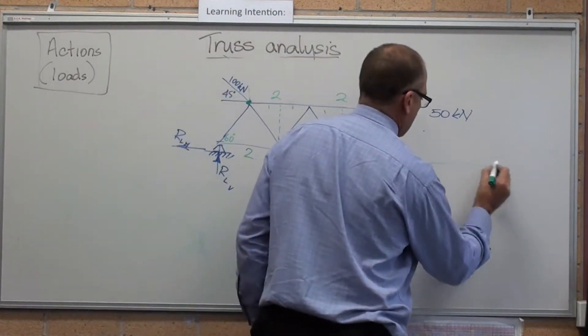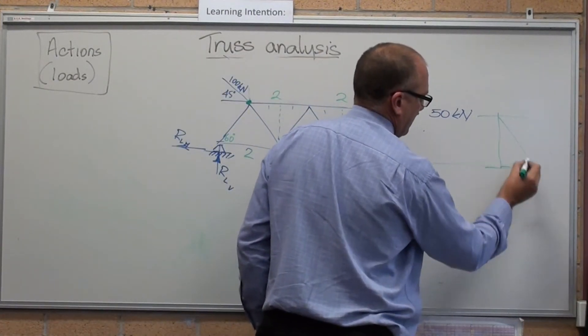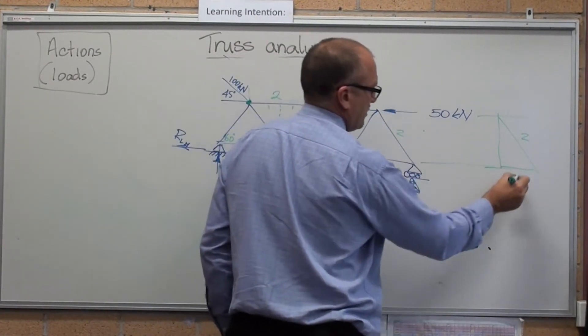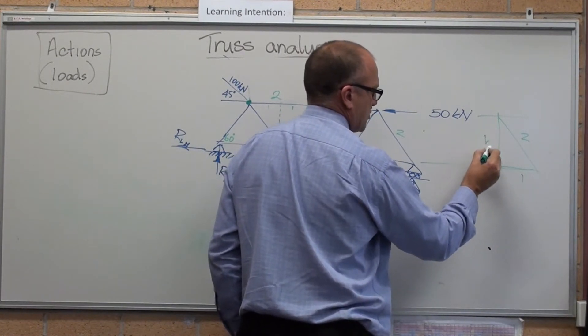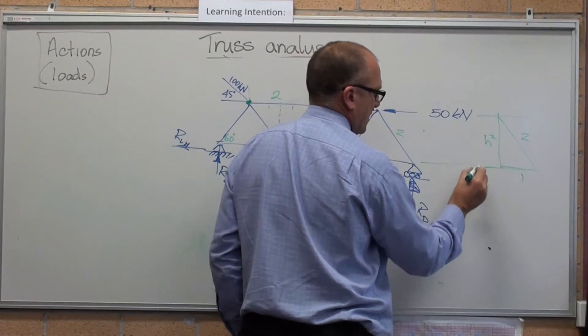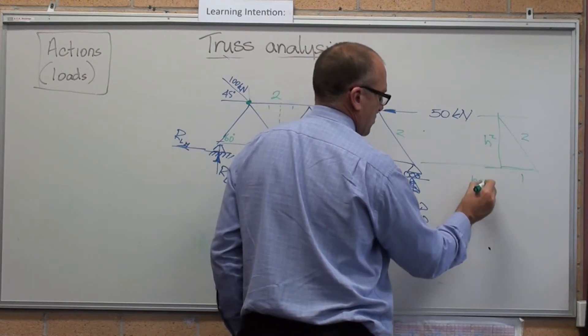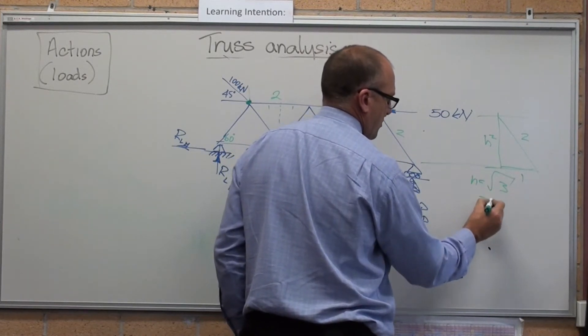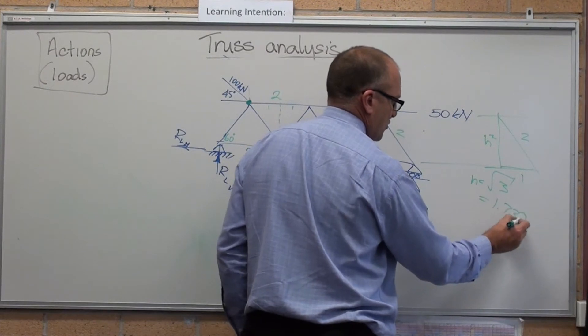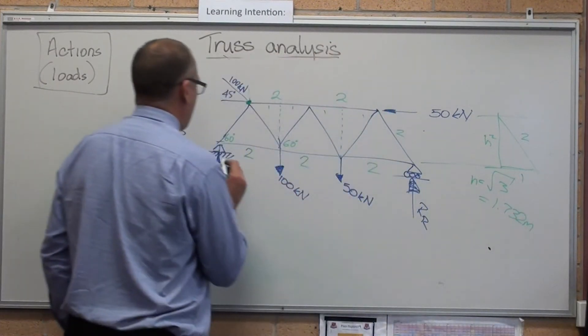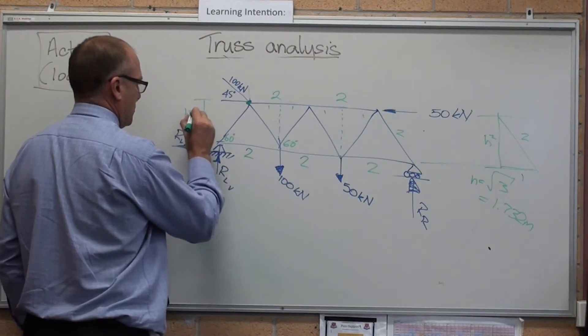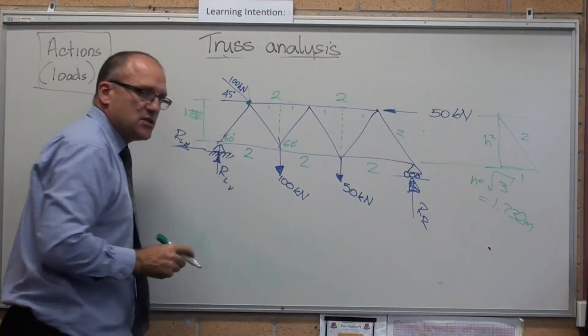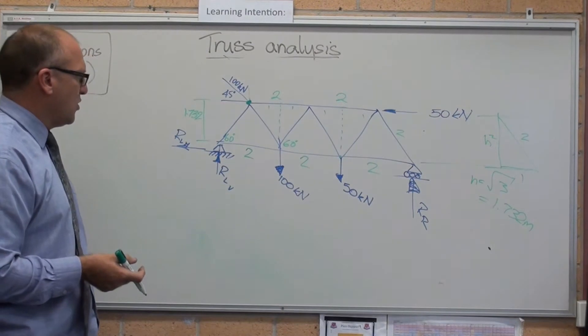The height of that, if you look at that, that's 2 metres, that's 1 metre. 1 squared plus h squared equals 2 squared. So h equals the square root of 3 equals 1.732 metres. That vertical distance is 1.732 metres.